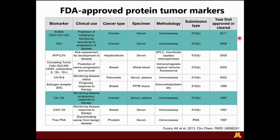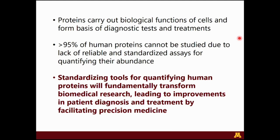Looking at a snapshot of FDA-approved protein tumor markers, ovarian cancer markers are highlighted in teal. CA-125 received FDA approval in 1997, HE4 received approval in 2008, and ROMA — a multi-index diagnostic biomarker — was cleared in 2011. The rate of FDA approval is about one per year, with many opportunities for additional biomarkers. More than 95% of human proteins cannot be studied reliably due to a lack of reliable and standardized assays for quantifying their abundance, so standardizing tools for quantifying human proteins has the potential to fundamentally transform biomedical research.